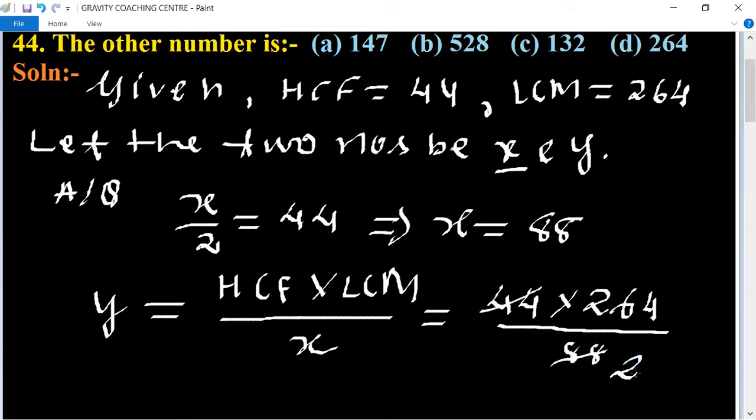So table of 2, divided by 2 gives us 132. So 132 is the required answer. Y equal to 132, which is the other number. So option C is the correct answer.